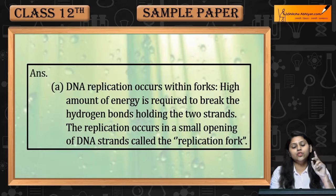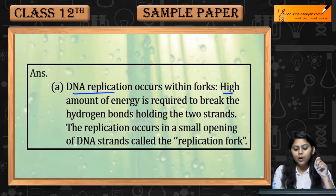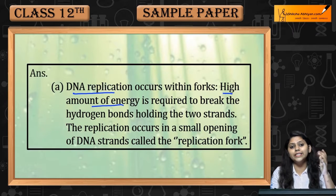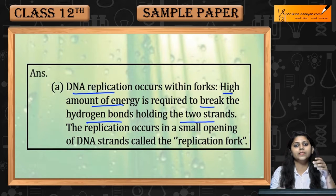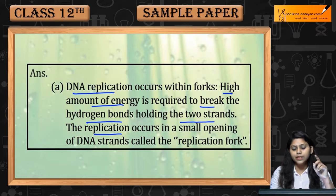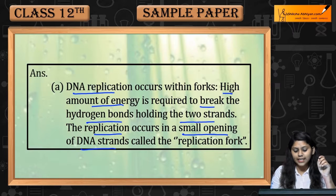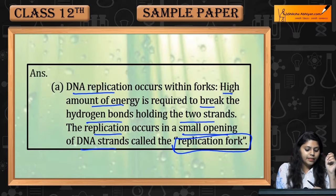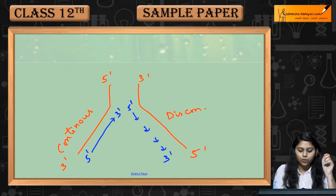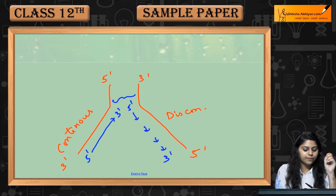DNA replication occurs within the fork because a high amount of energy is required to break the hydrogen bonds holding the two strands. ज्यादा energy required है. Replication होती है in small openings of DNA strands, जिसे replication fork कहते हैं — DNA strands की opening, this region.